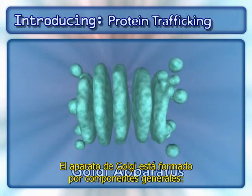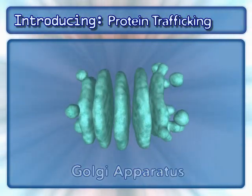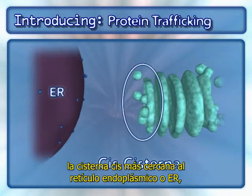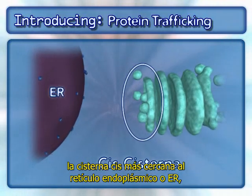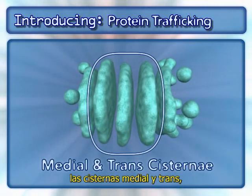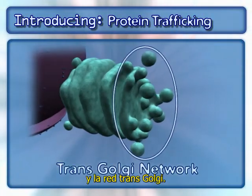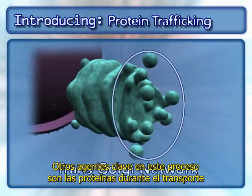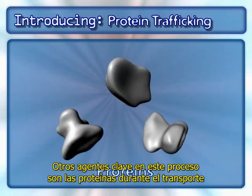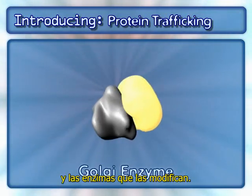The Golgi apparatus consists of general components: the cis-cisterna nearest the endoplasmic reticulum, the medial and trans-cisternae, and the trans-Golgi network. Other key players in this process are the proteins being transported and the enzymes that modify them.